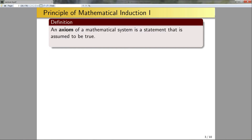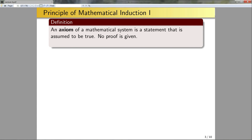Now I'm going to introduce the principle of mathematical induction. Before doing so, I want to formally define what an axiom is. An axiom of a mathematical system is a statement that is assumed to be true — no proof is given. Examples include: one is a number; for any given number I can add one and get a new number; parallel lines do not cross. From axioms we derive propositions and theorems, which are true if and only if the axioms we assumed hold.